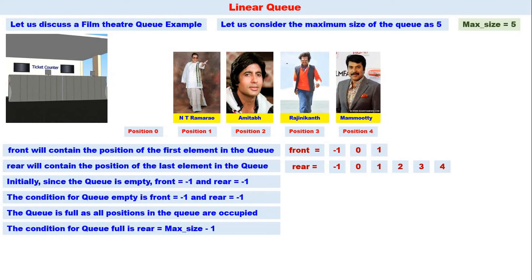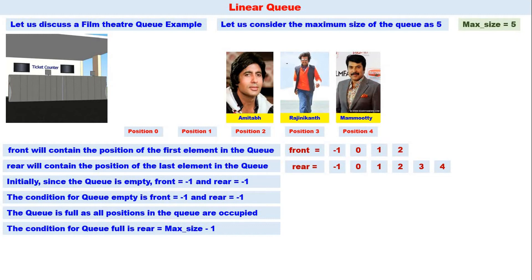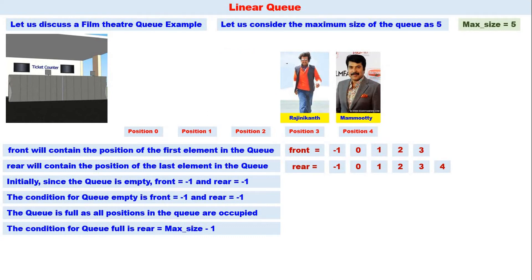The ticket clerk gives a ticket to NT Ramrao Garu, who goes inside the theater. Front becomes two — now the first person is Amitabh Bachchanji and the last is Mohanlal sir, so front equals two and rear equals four. Then the clerk gives a ticket to Amitabh Bachchanji, who also goes inside the theater. Front becomes three; now Rajnikan sir is first and Mohanlal sir is last, so front equals three and rear equals four.